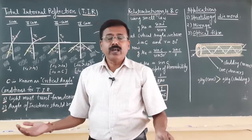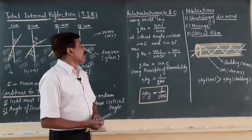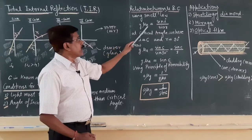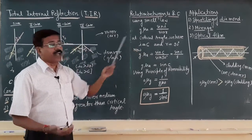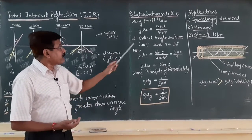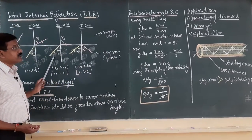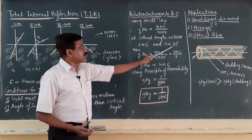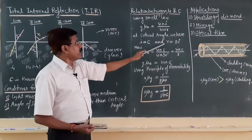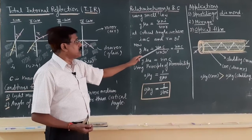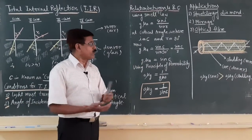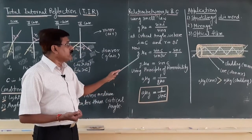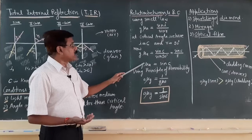Now we will find the relation between refractive index and critical angle. Using Snell's law for light traveling from glass to air, G mu A equals sin i divided by sin r. At the critical angle — the third case — i equals c (the critical angle) and the angle of refraction is 90 degrees. Substituting these values, G mu A equals sin c divided by sin 90°, which gives G mu A equals sin c. This is the refractive index of air with respect to glass.